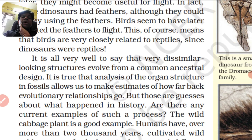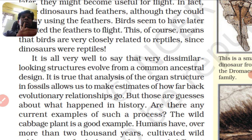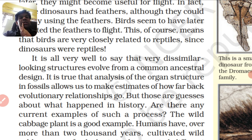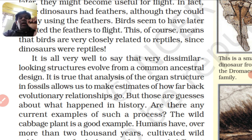It is also very well to say that very dissimilar looking structures evolve from a common ancestral design. Dissimilar structures that look different can share one ancestral design. Ancestral design means that the body structure can be fundamentally the same — it is just the difference in how one part changes. If there is a little change in the DNA, the resulting body will look like a different organism.